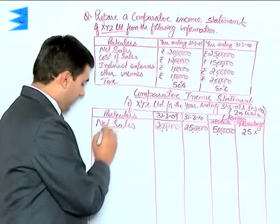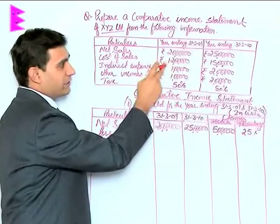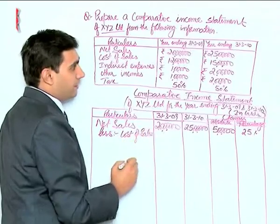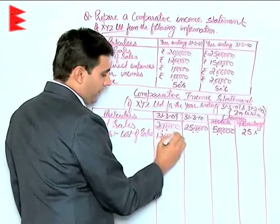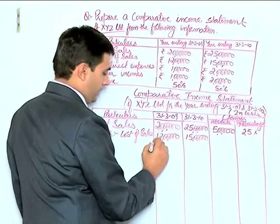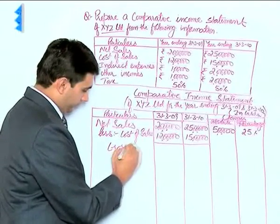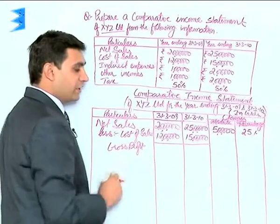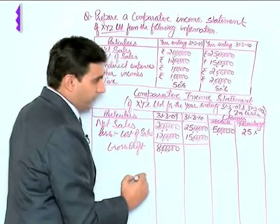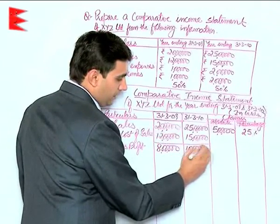Out of net sales we have to deduct cost of goods sold. The cost of sales is given as 12 lakhs for the first year and 15 lakhs for the current year. Deducting it, we get gross profit: for the first year it is 20 lakhs minus 12 lakhs, which is 8 lakhs; and for the current year, 25 lakhs minus 15 lakhs, which is 10 lakhs.